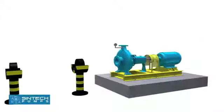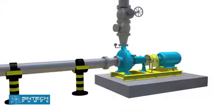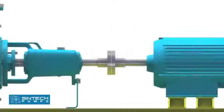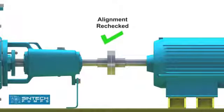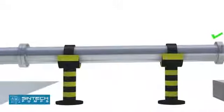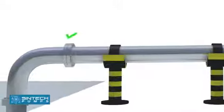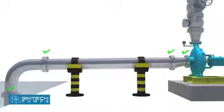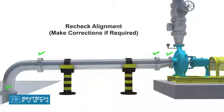After the alignment is completed, the piping associated with the pump should be bolted. Once this is completed, the alignment should be rechecked and similar readings should be obtained. If this is not the case, then the piping should be investigated and suitable corrections made. If left unattended, it can cause stress on the pump casing.